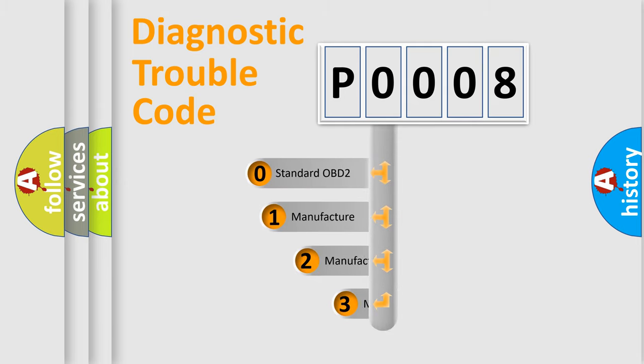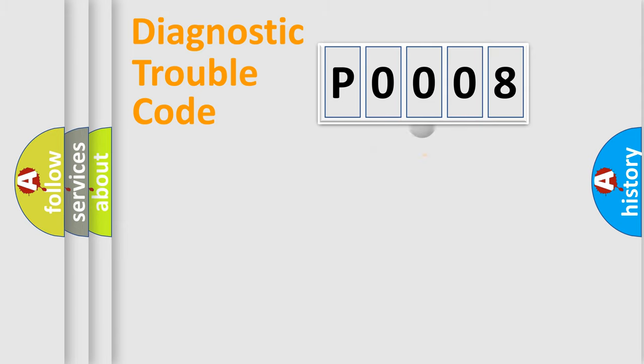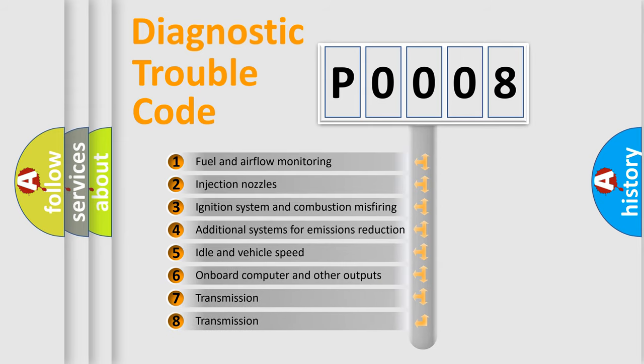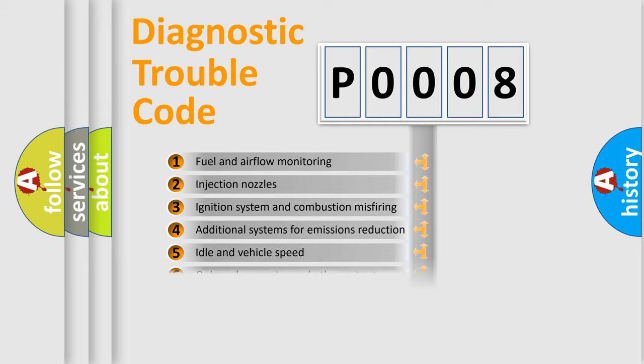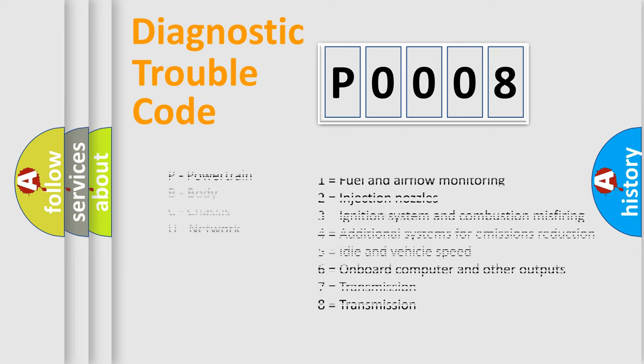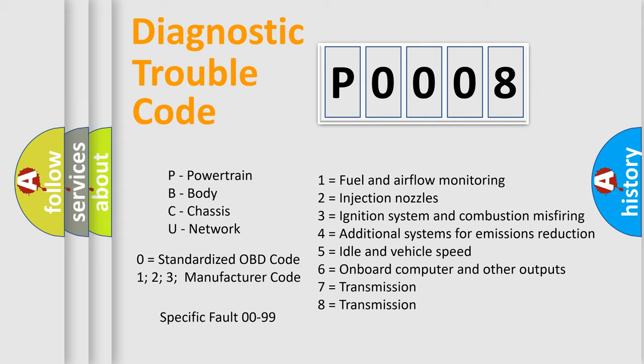If the second character is expressed as zero, it is a standardized error. In the case of numbers 1, 2, or 3, it is a more precise expression of the car-specific error. The third character specifies a subset of errors. The distribution shown is valid only for the standardized DTC code. Only the last two characters define the specific fault of the group. Let's not forget that such a division is valid only if the second character code is expressed by the number zero.